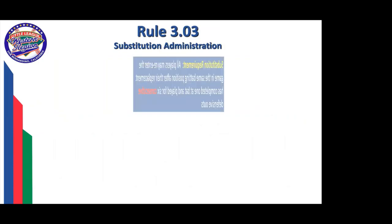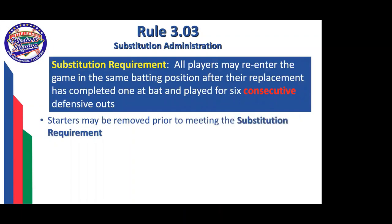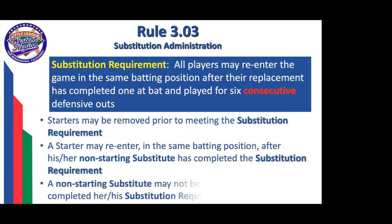Substitution administration under Rule 3: all players may re-enter the game in the same batting spot after their replacement has met mandatory play. A starter can be removed prior to meeting the substitution requirements and may re-enter in the same batting position after his or her non-starting substitute has completed one at-bat and six consecutive defensive outs. A non-starting substitute may not be removed until completing one at-bat and six consecutive defensive outs. Note that for a starter, the defensive outs do not need to be consecutive.